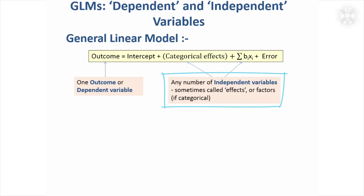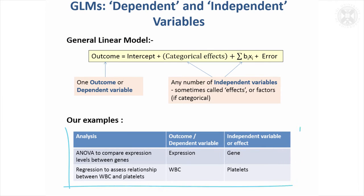They're always the things that are on the right hand side being tested and then the outcome is the thing you're interested in analyzing. In our examples, the very first example was looking at gene expression comparing between different genes, so the outcome would be expression and the independent variable would be gene. In our regression example we were looking at predicting white blood cell count from platelets. So white blood cell count would be the outcome and platelets would be the independent variable.